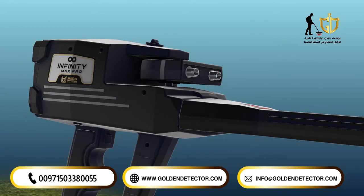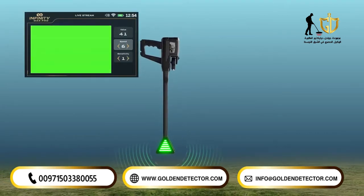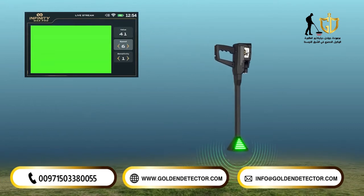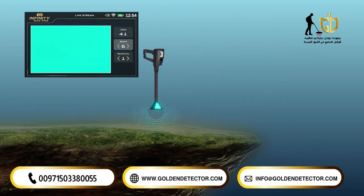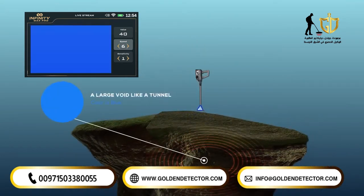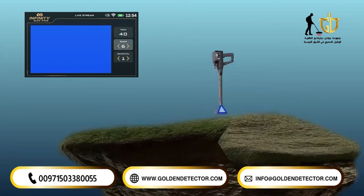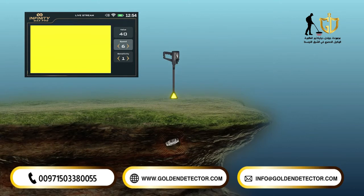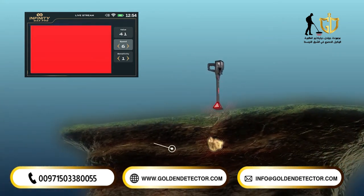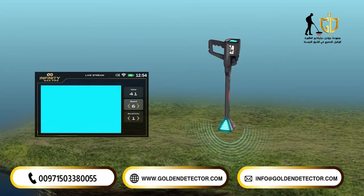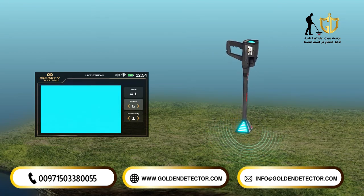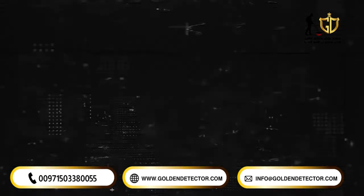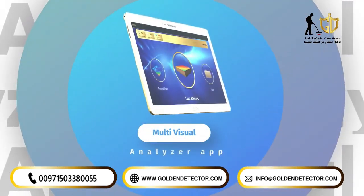The following is a description of the color connotations for different target types: gold or a larger piece of metal object. During the live stream, the LED lights on the head of the VST probe display the same color as the screen display, making it easier for the user to focus on the scan process instead of looking at the screen.